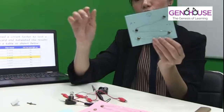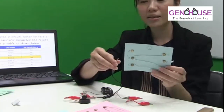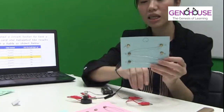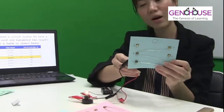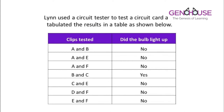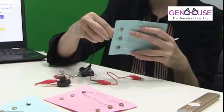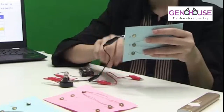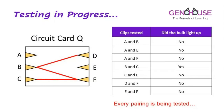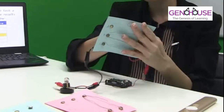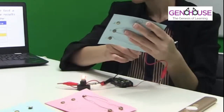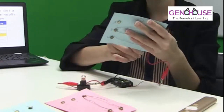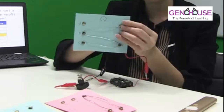Now I'll do the same for card Q. I test B and C first — yes, it lights up. Next I test A and B, which shouldn't light up. But when I test D and F, it lights up. So this card is not the one Lynn used either.